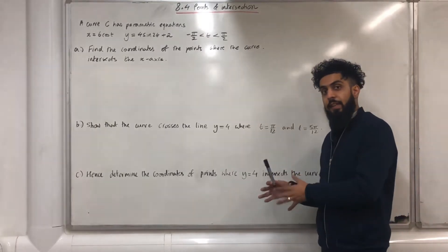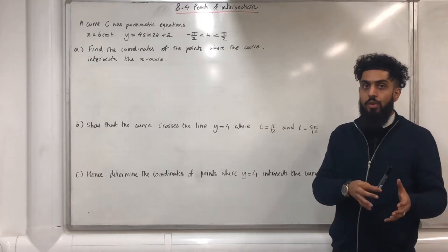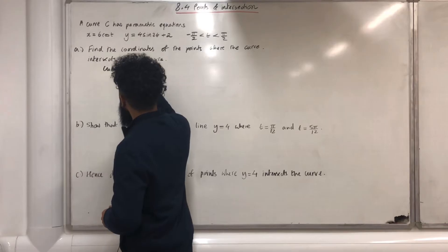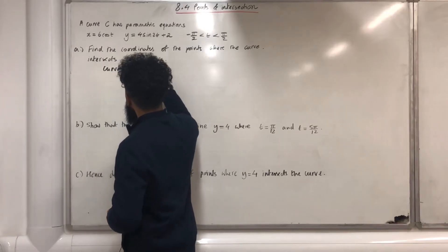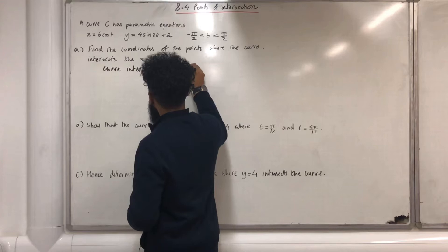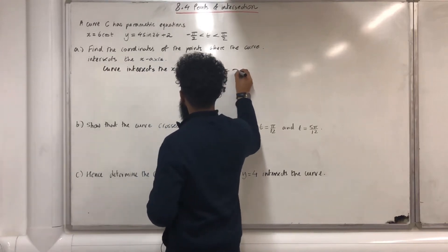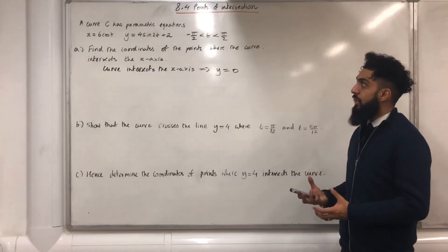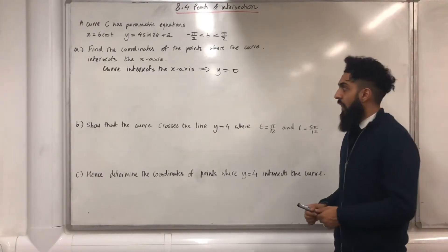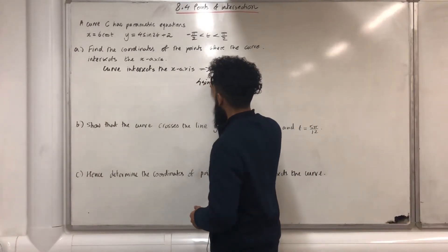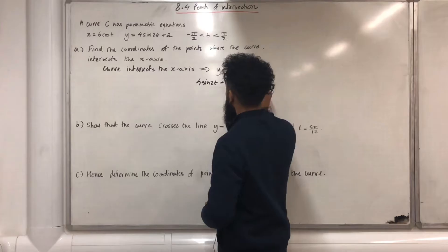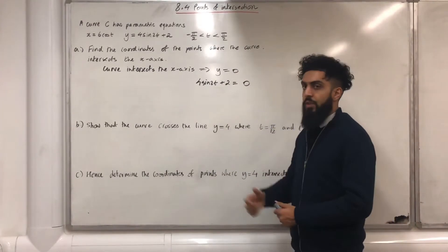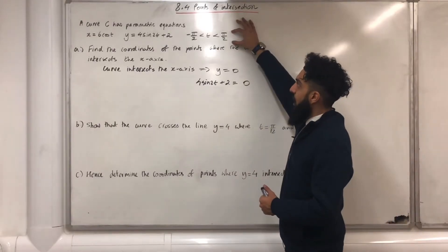If the curve intersects the x-axis, this implies that y is equal to 0. I know what y represents. It is just 4 sin 2t plus 2. So I can write 4 sin 2t plus 2 is equal to 0. All I need to do is solve this particular trigonometric equation in this interval over here for t.